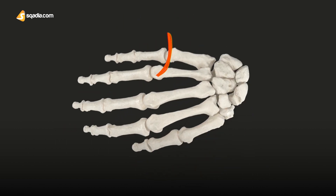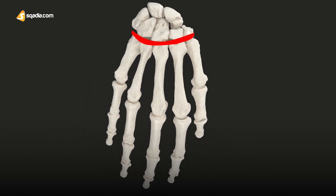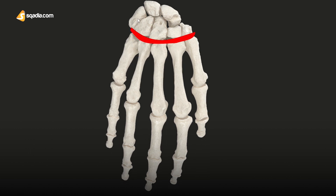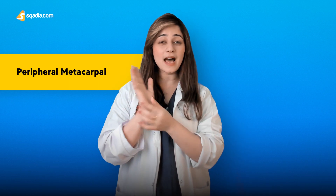If we change the view, we see a transverse arch formed by the metacarpal bones, to which the rigid row of distal carpal bones are fixed. The partial metacarpals — the thumb and the little finger — both form the cup-shaped palmar gutter, which is deeper in the center, forming a concavity.